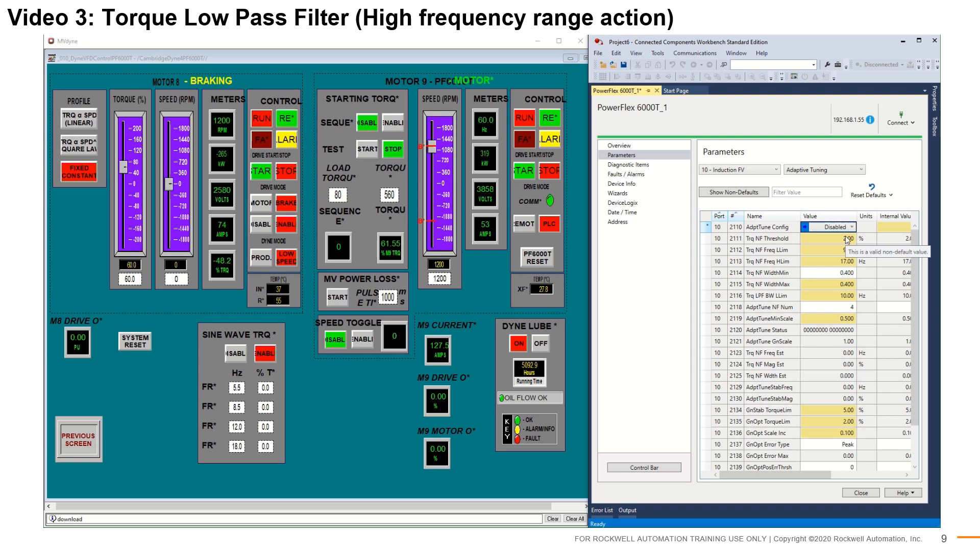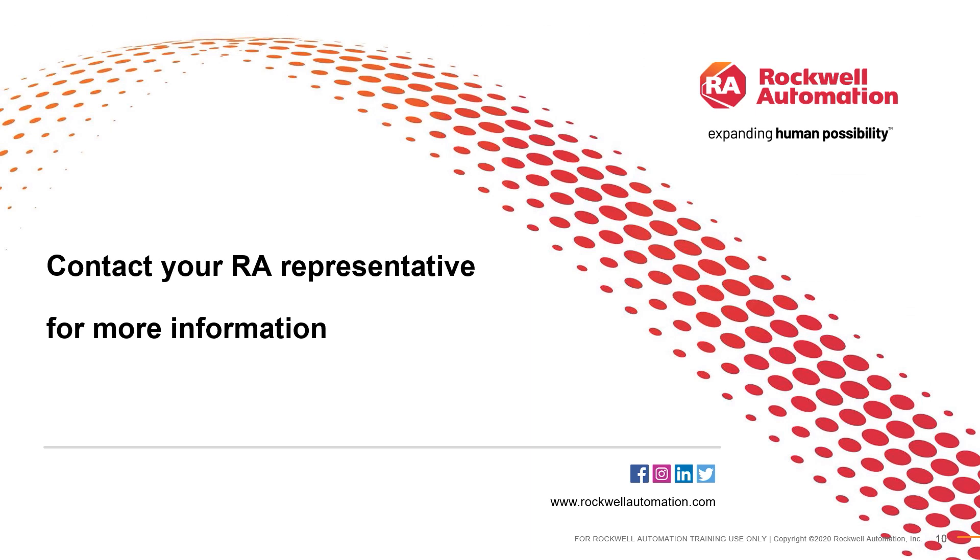This concludes the video demonstration of adaptive tuning on the PowerFlex 6000T drive. In this video demonstration, we observed adaptive tuning's response in the presence of low, mid, and high-frequency resonance events. It is observed that adaptive tuning automatically sets gains and filters to optimize the tune of the control loop. Please contact your Rockwell Automation Service representative or customer support for more information on configuring this feature for your applications. Thank you.